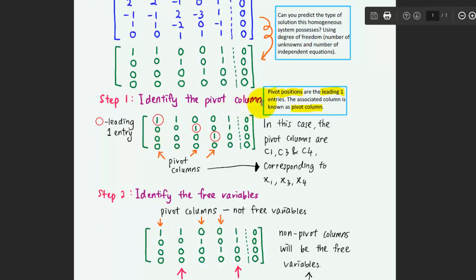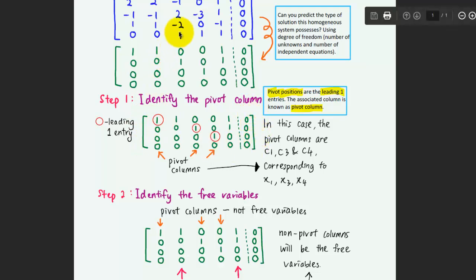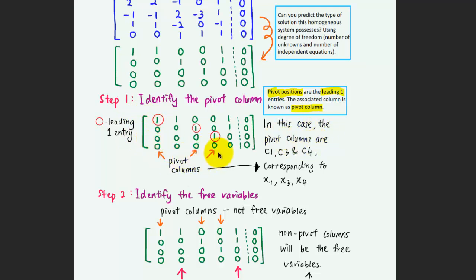Pivot positions are the leading one entries, and the associated columns are known as pivot columns. Looking at the reduced row echelon form, the first entry, this entry, and this entry are the pivot columns because they are the leading ones along the first, second, and third rows. In this case the pivot columns are the first, third, and fourth columns, corresponding to variables x1, x3, and x4.